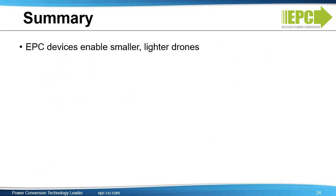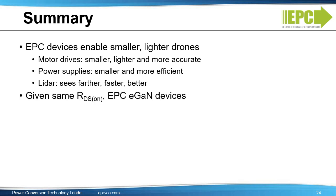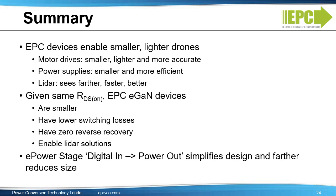In summary, EPC devices enable smaller and lighter drones. The motor drives are smaller, lighter, and more accurate. The power supplies are smaller and more efficient for longer battery life. And the LiDAR systems see farther, faster, and better. Given the same RDS-ON, EPC's EGAN devices are smaller, have lower switching losses, and have no reverse recovery. EGAN technology enables LiDAR solutions that have been shipping in volumes to this application for several years, including custom integrated solutions. Lastly, the e-power stage digital in and power out family simplifies design and further reduces size for all these 48-volt applications.